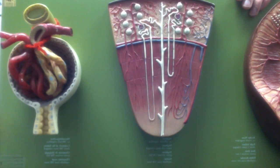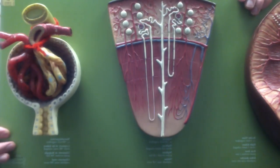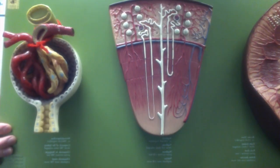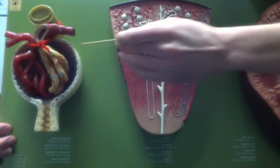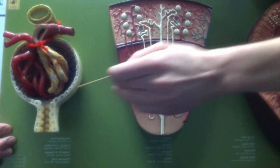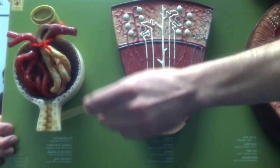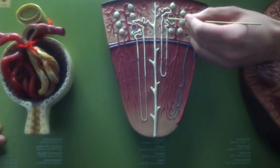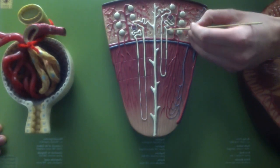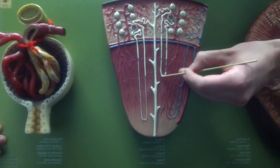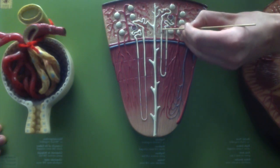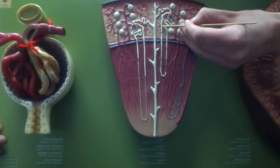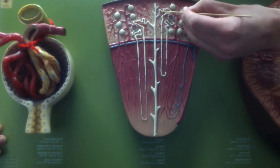From the renal corpuscles you have the proximal convoluted tubule—you can see that over here—leading to the descending and ascending loop of Henle. And then up here you have the distal convoluted tubule.